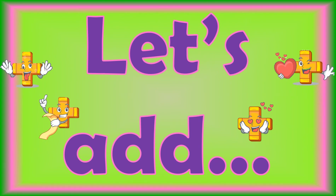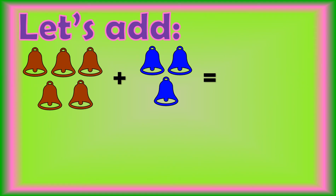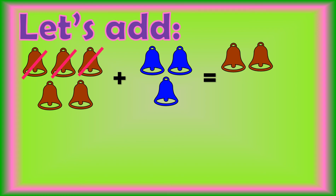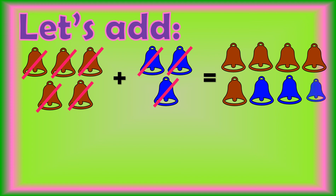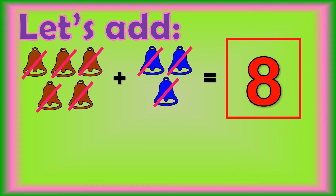Now that we know the parts of an addition number sentence, let's add! Let's count the brown and blue bells. 1, 2, 3, 4, 5, 6, 7, 8. There are 8 bells in all.